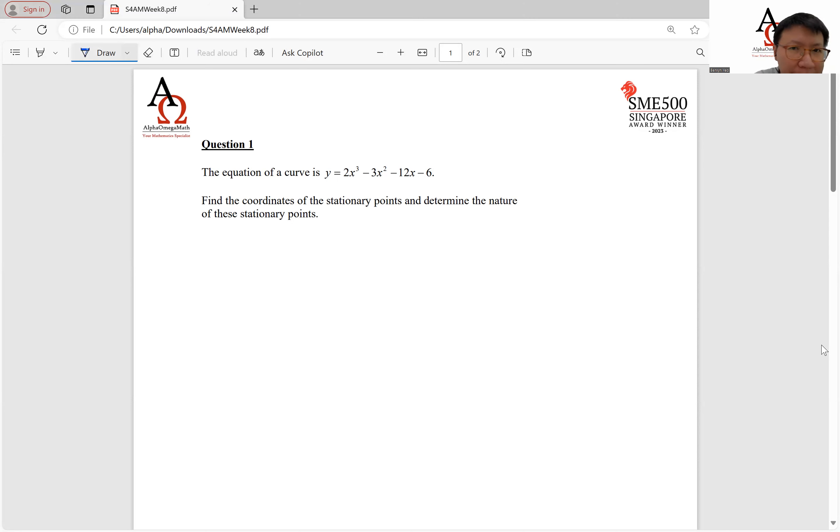So a quick recap, when we have a stationary point, this is a point in our curve or graph whereby the dy over dx value is 0. But unless we take a step further, we are able to tell whether this point is maximum, minimum, or is it a point of inflection.